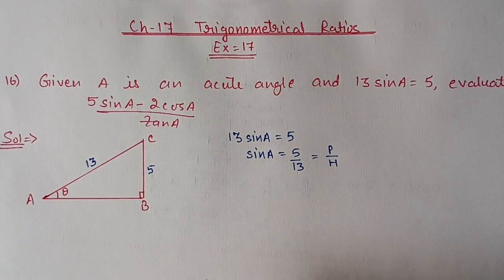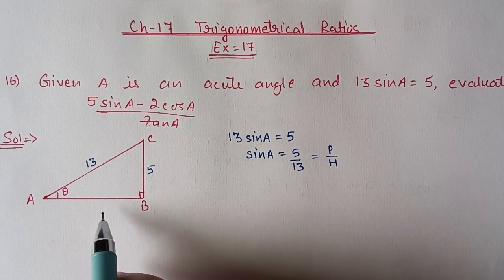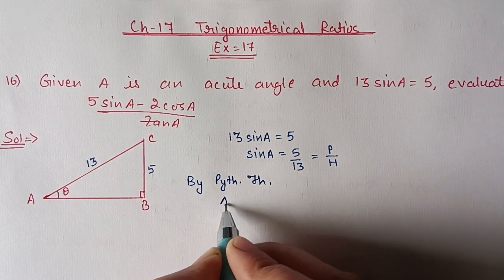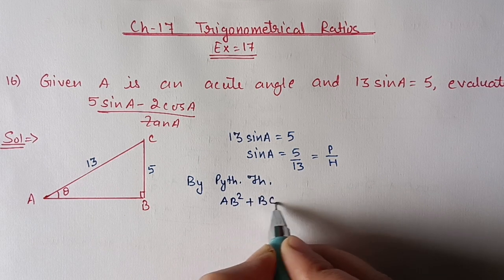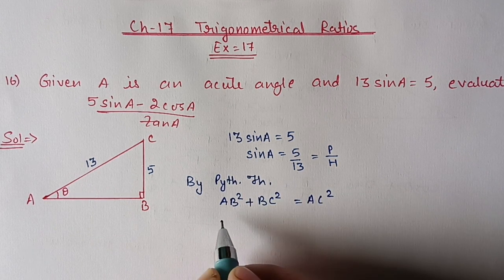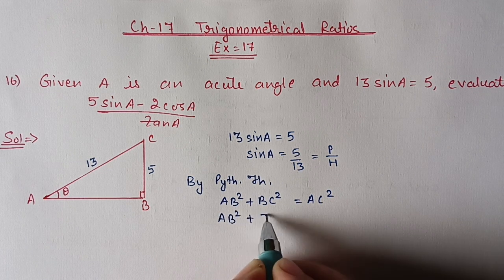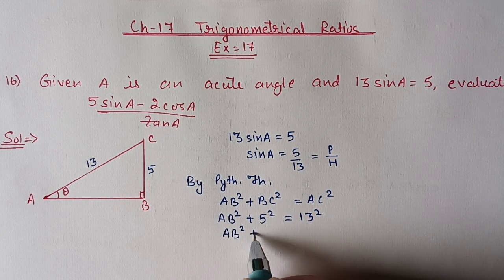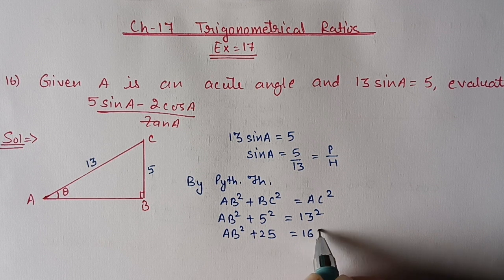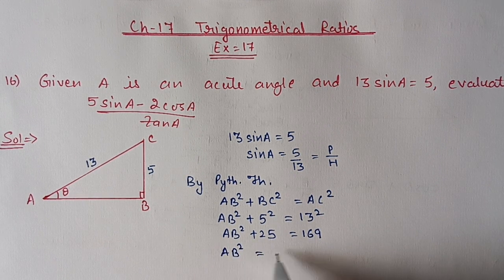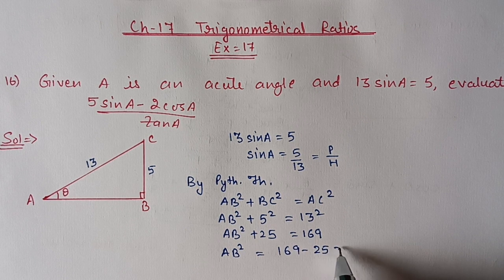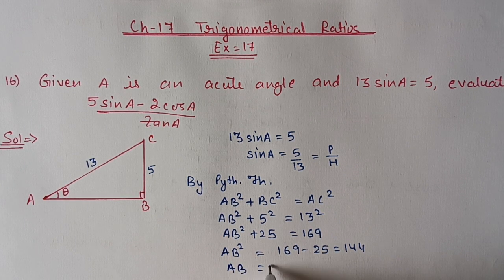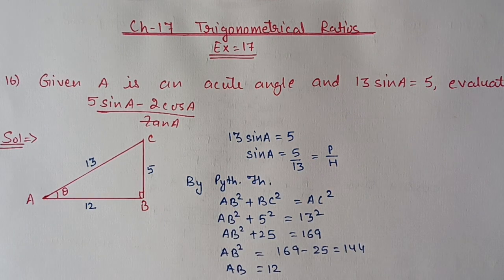With the help of Pythagoras theorem we will find out the base. AB² + BC² = AC². AB we have to calculate, BC is given as 5 and AC is 13. 5² is 25, 13² is 169. Shifting: 169 - 25 = 144, and 144 is the square of 12. So AB is equal to 12 units.